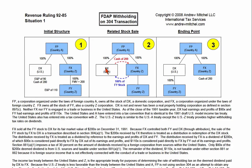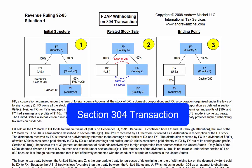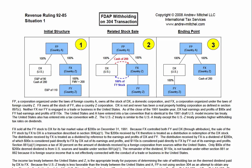In the ruling, DX paid $200 for the shares of FY, so FX received $200 from DX for the shares of FY. This type of cross-chain sale of a corporation is known as a Section 304 transaction. Although the mechanics of a Section 304 transaction are a bit complex, the transaction is generally treated as a dividend out of the acquiring entity's earnings and profits, and then as a dividend out of the target entity's earnings and profits.